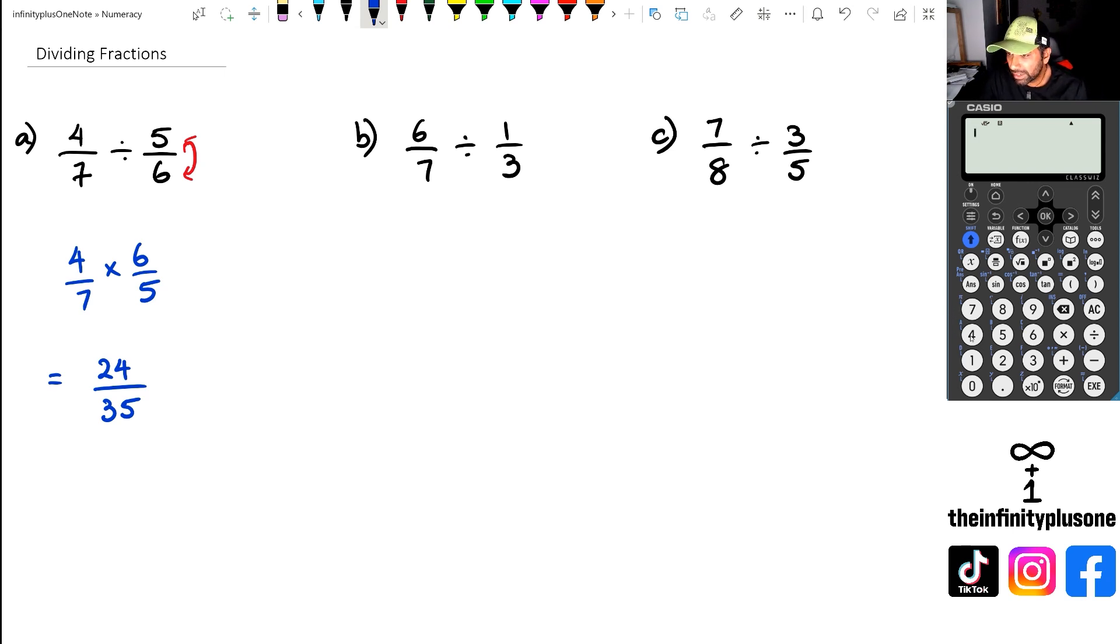What I'm going to do is I'm going to do this in the calculator as well, just to check that I'm on the right track. So we've got four sevenths divided by five sixths. And as you can see, 24 over 35, we can't really simplify that any further.